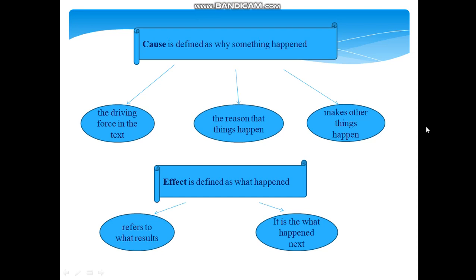Effect Signal Words are defined as What happened. They refer to What results and It is the What happened next. Here are some Signal Words that may indicate information is organized as Cause and Effect, such as Because, As a Result, Resulted, Caused, Effective, Since, Due to, Effect.